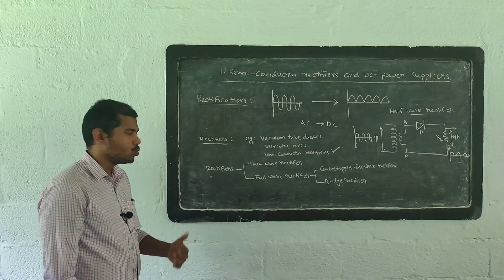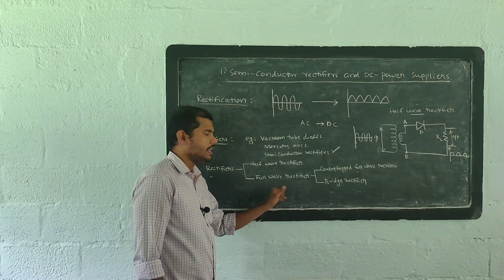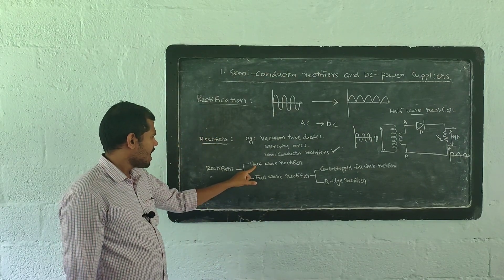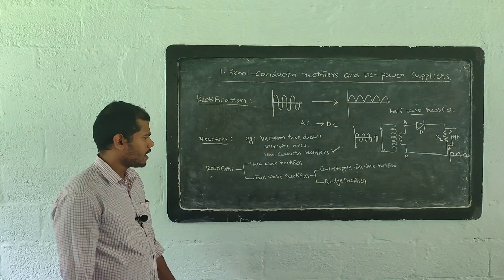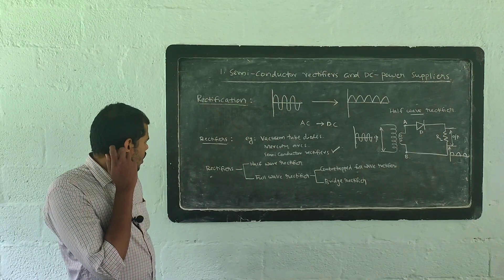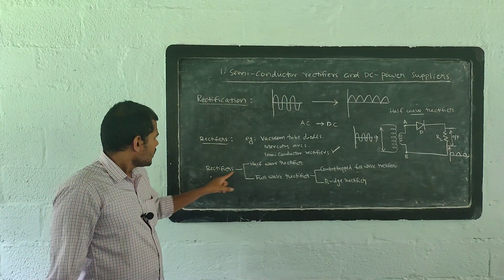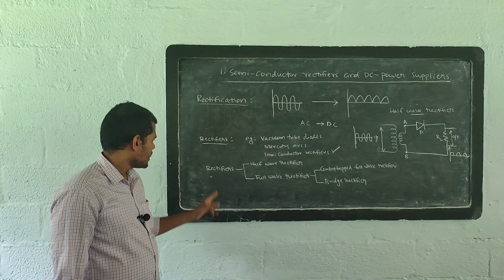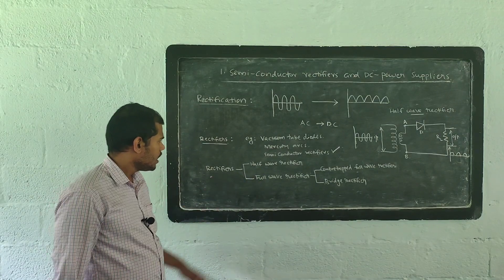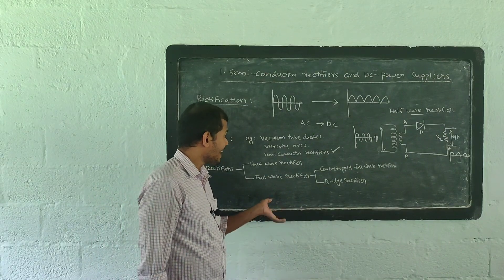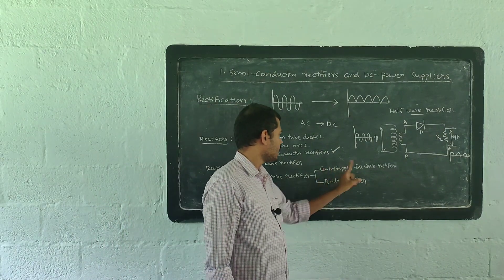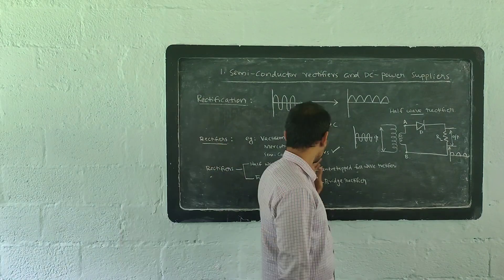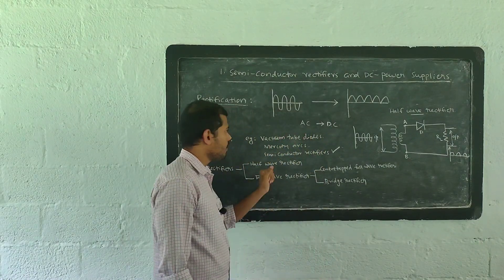These rectifiers can be classified into two: half-wave rectifier and full-wave rectifier. You studied about these in plus two classes. Full-wave rectifiers are again classified into two: center-tapped full-wave rectifier and bridge rectifier. First we have to discuss the half-wave rectifier.